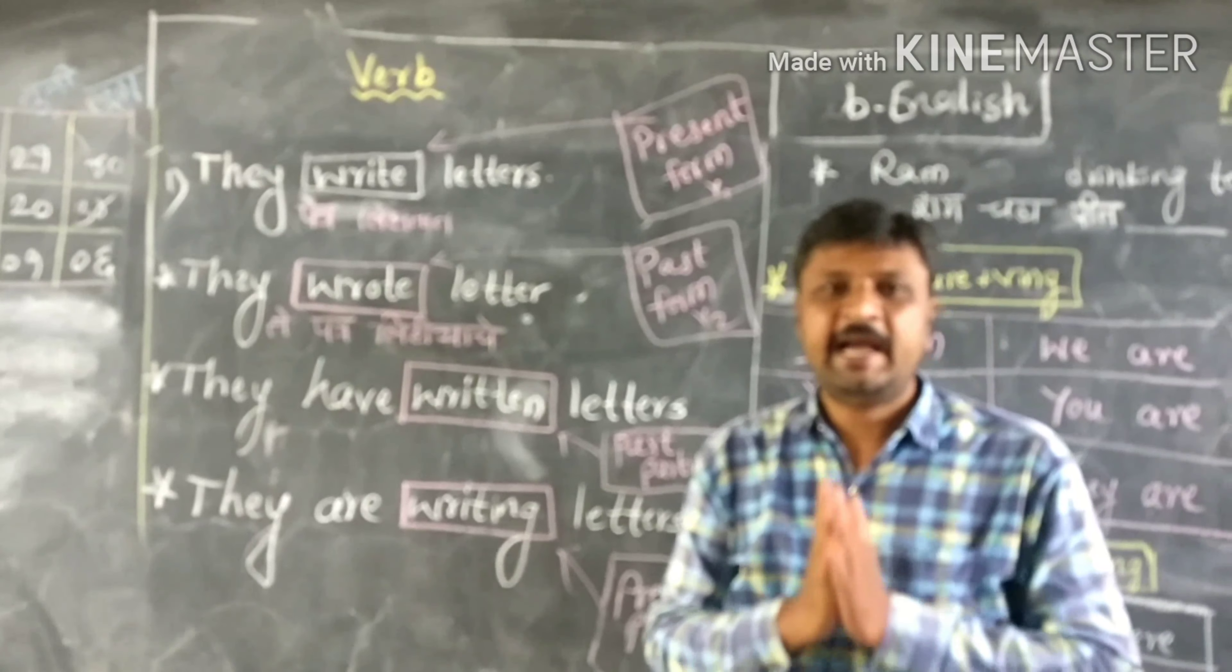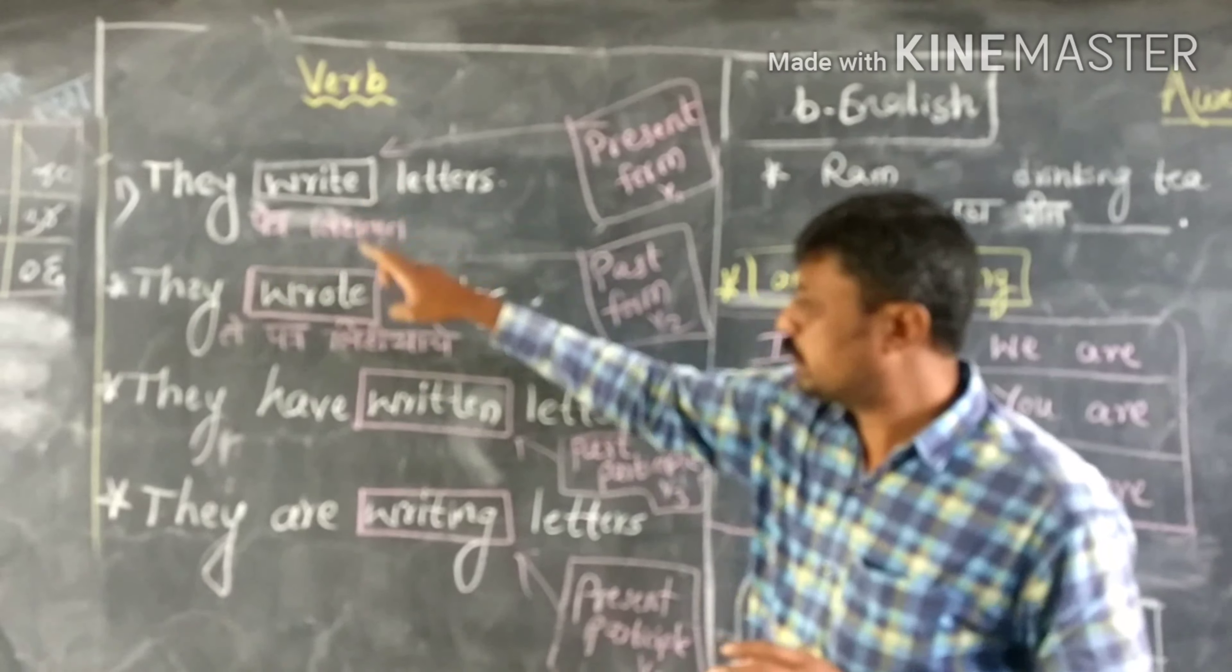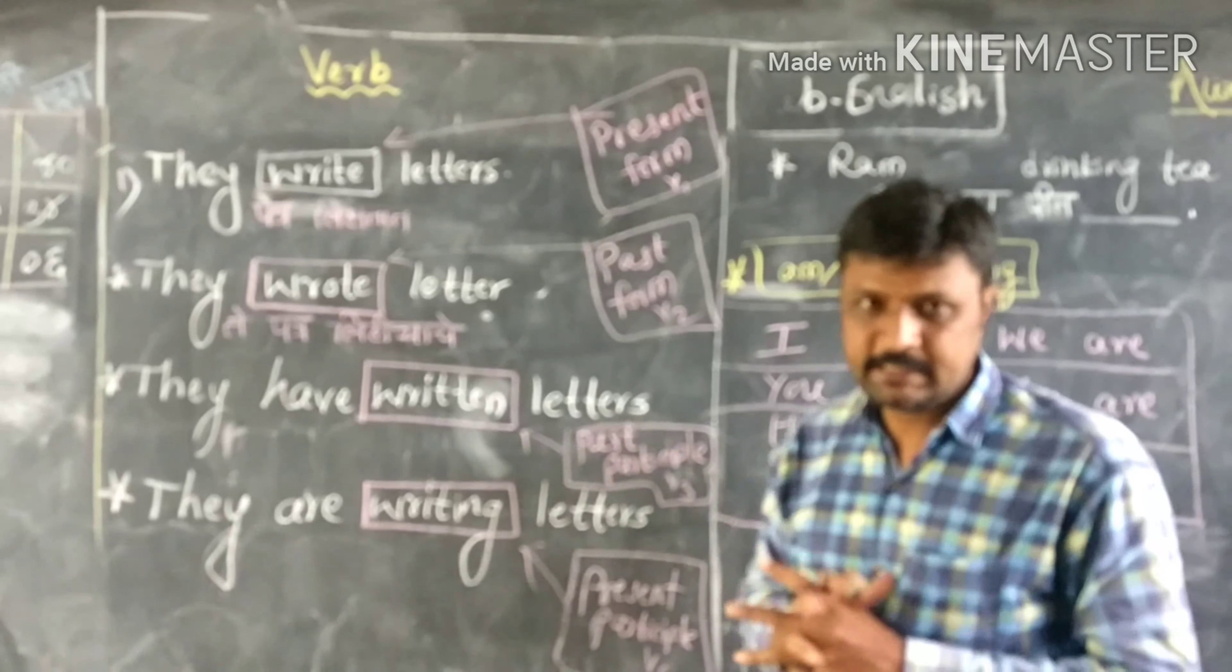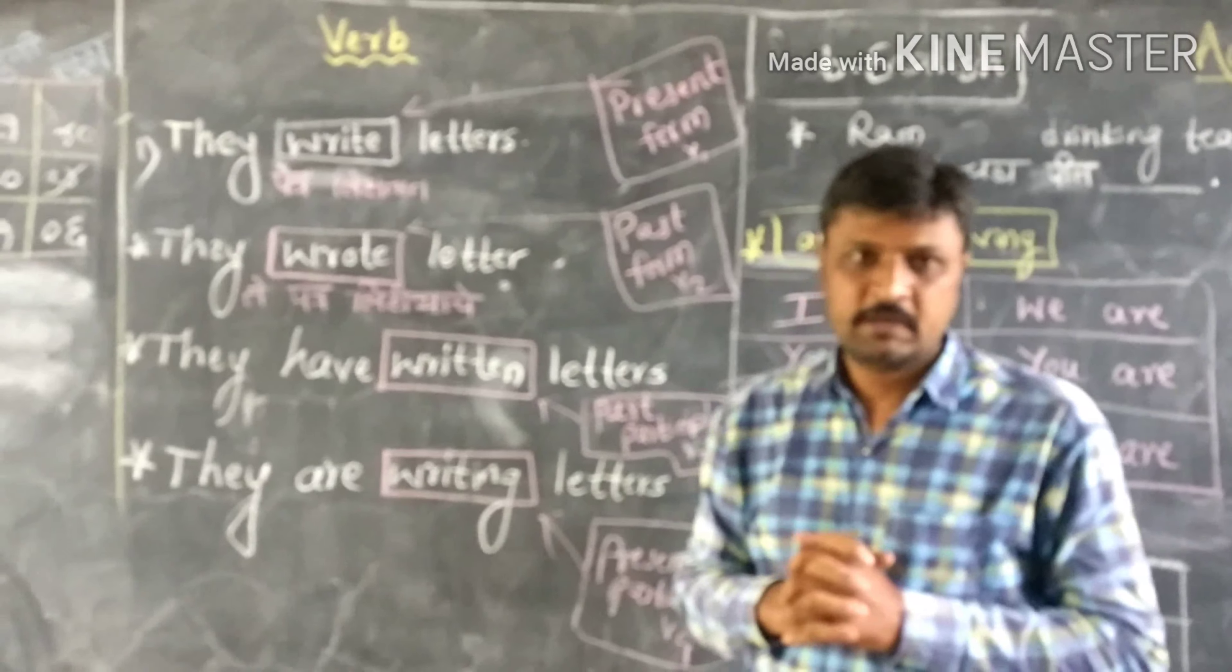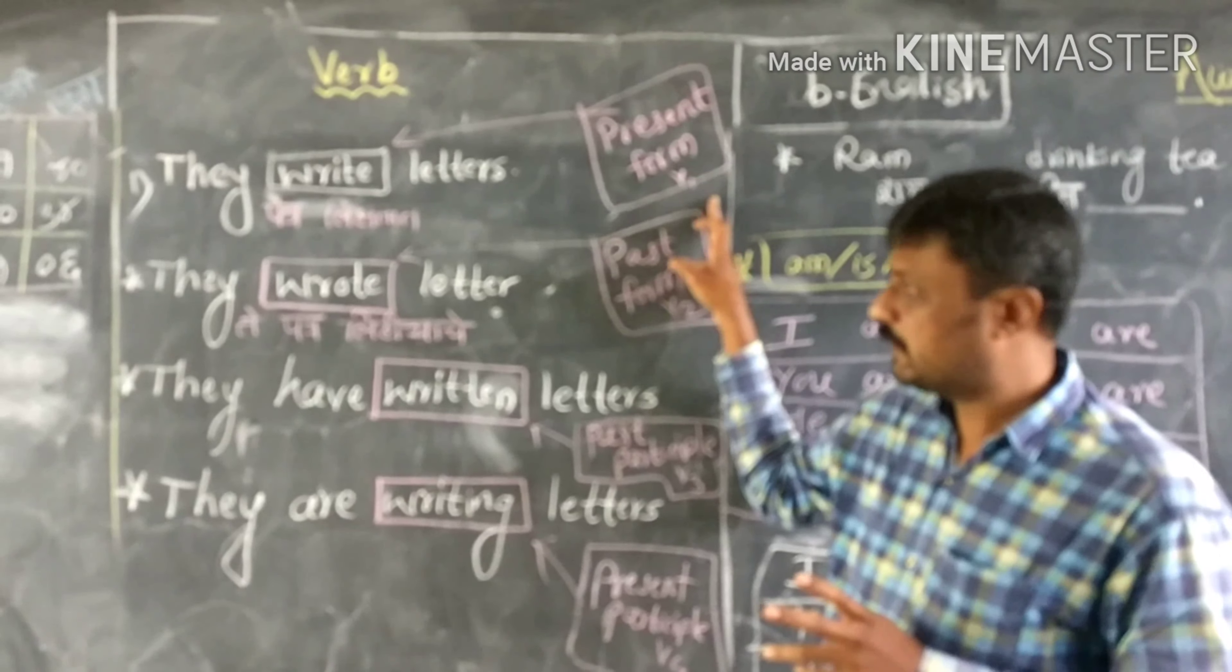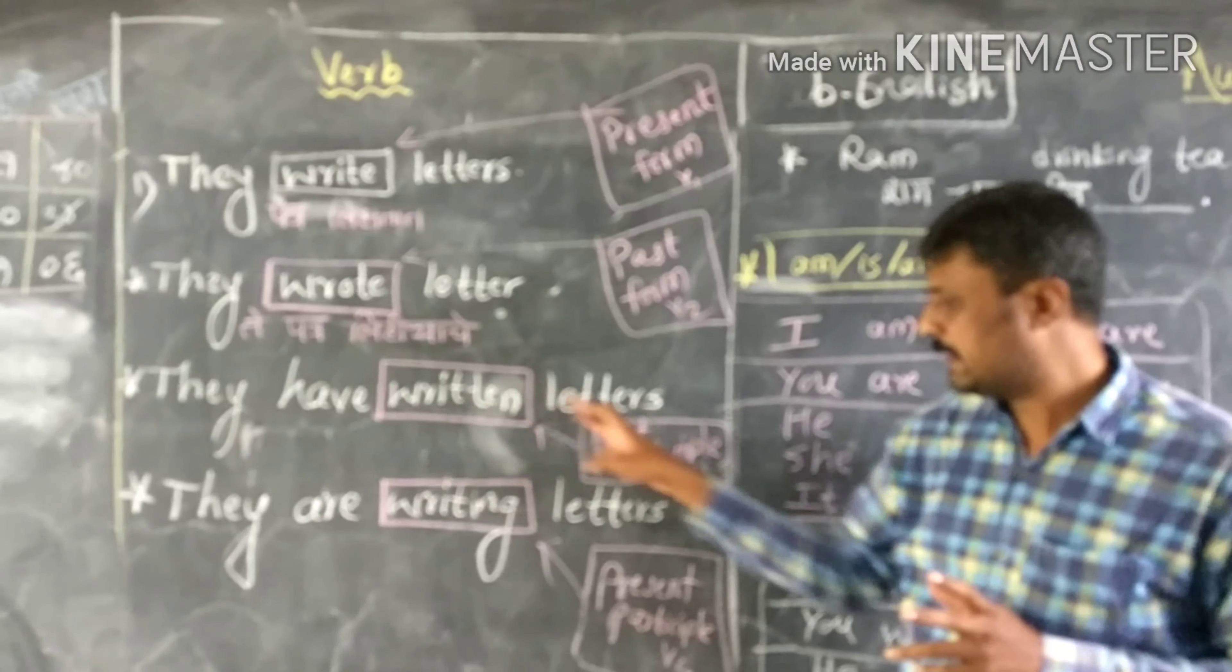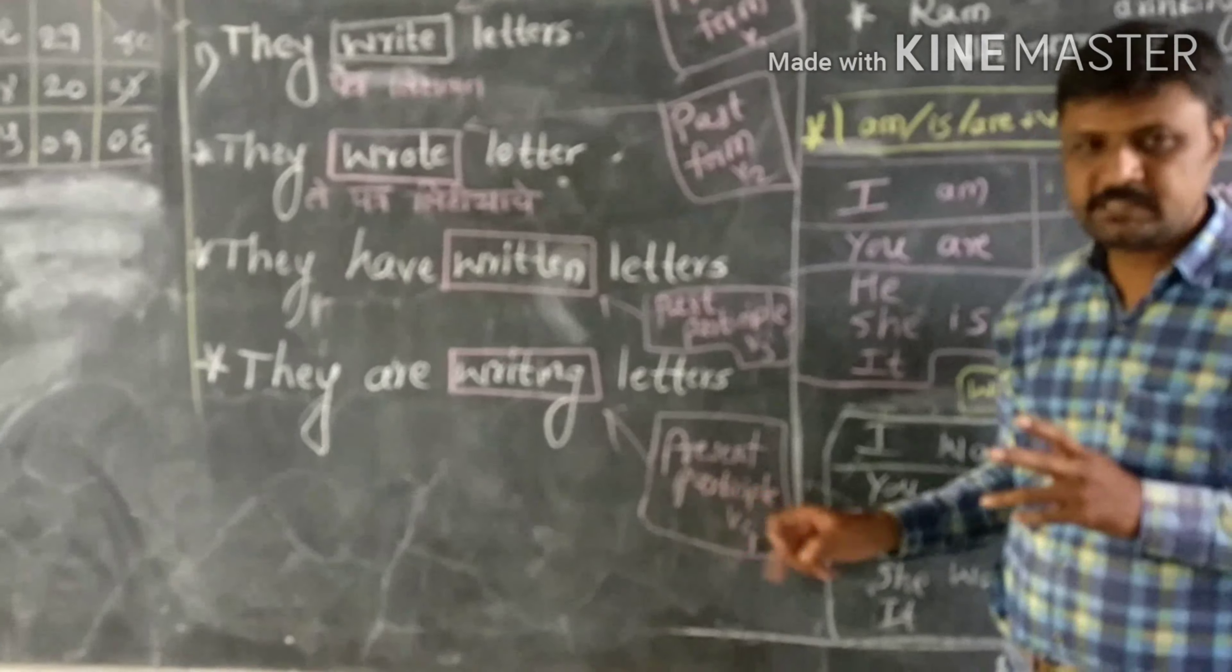So every verb has four forms. Write, wrote, written, writing are the four forms of write. Write is the present form, V1 or root. Wrote is the past form, V2. Written is the past participle. Writing is the present participle.